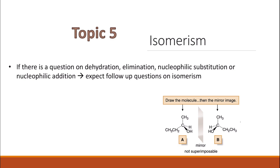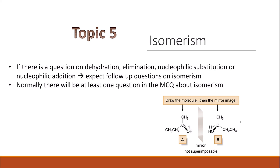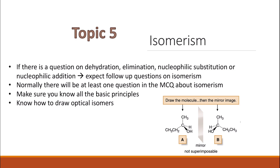Isomerism is one of the favourite topics in Paper 3 and featured massively in Paper 2 — there will be at least one question about isomerism. If there is a question about dehydration, elimination, nucleophilic substitution, or nucleophilic addition, expect a follow-up question on isomerism. Make sure you know all the basic principles: structural isomers and stereoisomers, the difference between them, the different types of stereoisomers, E/Z alkenes, and also optical isomers.